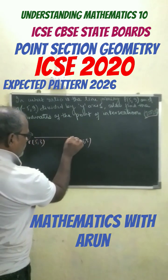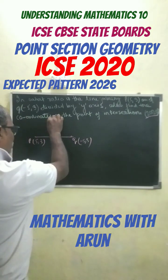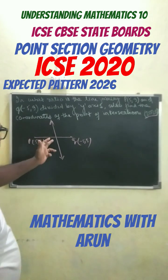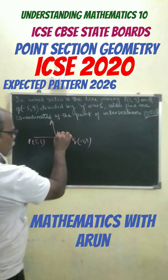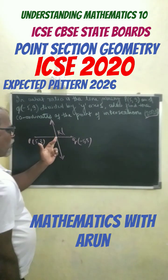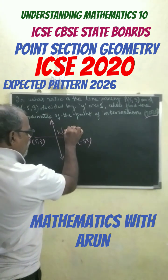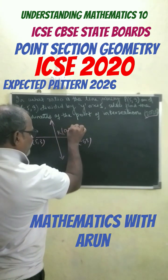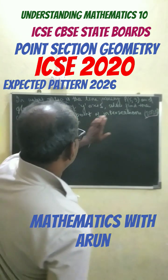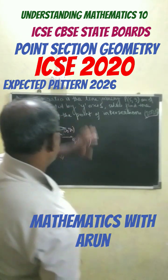Let us draw the line and divide it by the y-axis. Since the point on the y-axis always has x equal to 0, let the point of intersection be K with coordinates (0, y1). We need to find both the coordinates of K and the ratio.